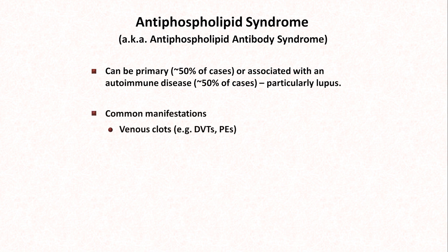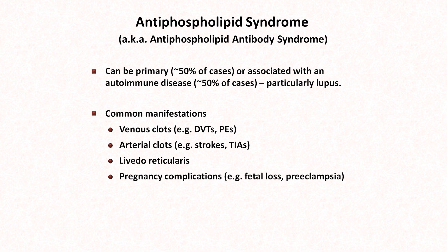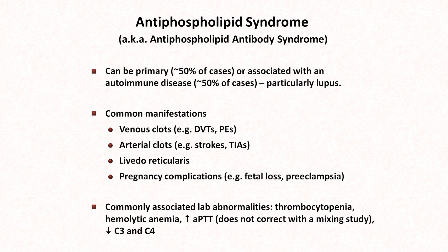Common manifestations include venous clots, such as deep vein thromboses and pulmonary emboli, arterial clots, such as strokes and TIAs, a skin condition called livedo reticularis, and the aforementioned pregnancy complications. Among hypercoagulable states, antiphospholipid syndrome is the most likely to cause arterial clots in addition to venous ones, whereas the other states predominantly cause only venous clots. Commonly associated lab abnormalities include thrombocytopenia, hemolytic anemia, and elevated PTT which does not correct with a mixing study, and low C3 and C4. That a prothrombotic state would be associated with an elevated PTT is a little counterintuitive, but this observation is speculated to be due to the antibodies binding to the phospholipids used in the PTT assay, so it's more or less a testing artifact that just happens to be diagnostically helpful.